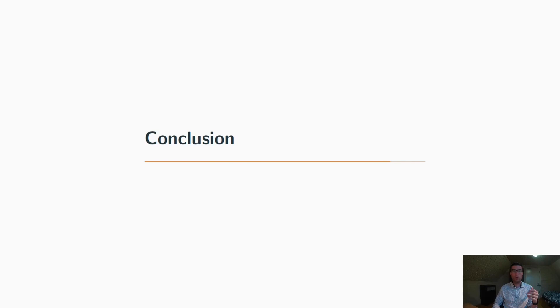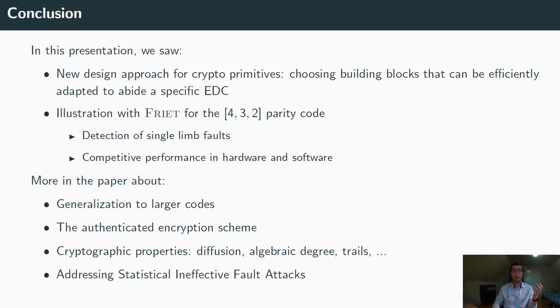To conclude, in this presentation we saw a new design approach for cryptographic primitives that consisted in choosing appropriate building blocks that could be efficiently adapted to abide a specific error-detecting code. We saw a concrete example for that with FRIT for the parity code for 3.2 that allowed us to detect any single limb faults, and also showed competitive performances both in hardware and in software.